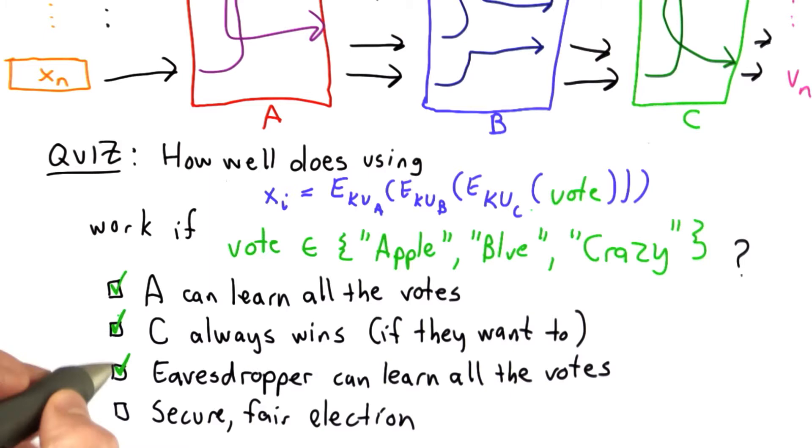So either A or an eavesdropper could do this. The second choice is a little more ambiguous. C could output any votes it wants. There's nothing that verifies the votes that C outputs.